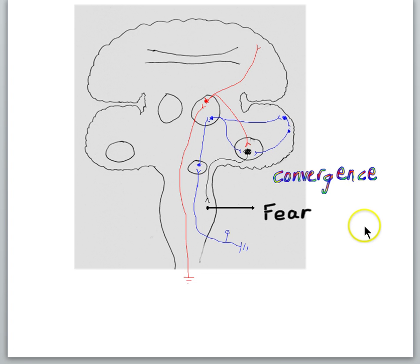So here again the fear conditioning case illustrates some general principles about learning. Learning often involves associating things in the world and here we're associating tone and shock. Learning involves convergence. The neural pathways for the tone and the shock have to converge somewhere, in this case it is the amygdala. And in addition, it illustrates that the actual biological basis of the learning itself is changes in synapse strength.